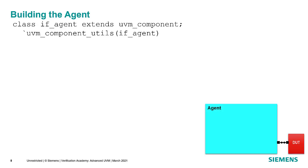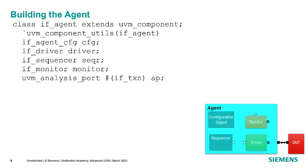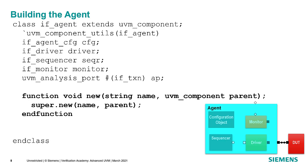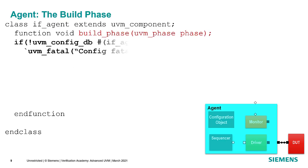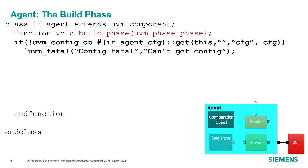Looking at the agent code: the agent is extended from uvm_component and registered with the factory using the uvm_component_utils macro. We declare the config object, driver, sequencer, monitor, and top-level analysis port, then define the standard constructor. In the build phase, we get the configuration object from the config database — it's a fatal error if it's missing because it contains critical information including the virtual interface. If the agent is active, we instantiate the sequencer and driver.